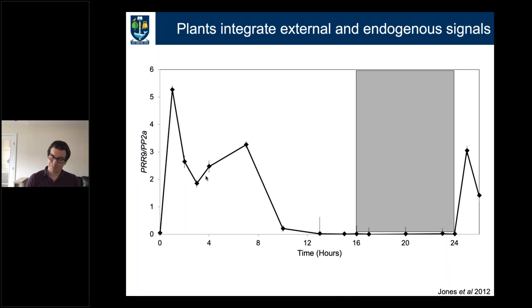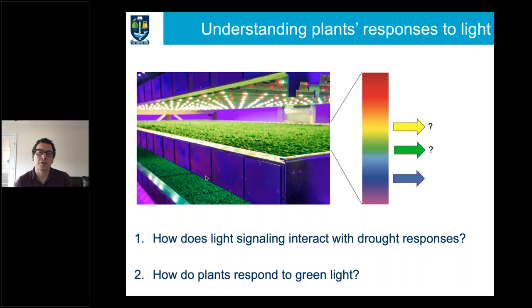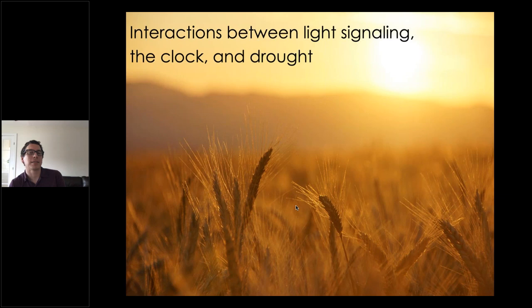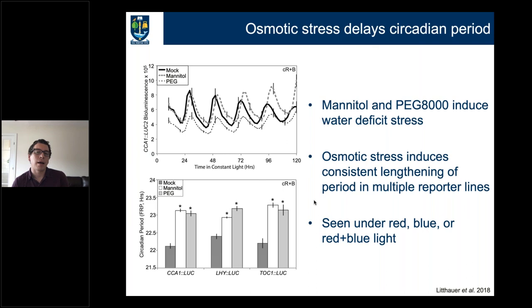Today I'm going to cover two stories. First, I'll touch on the blue side of the spectrum — a project looking at how light signaling interacts with drought responses in plants. Second, a passion project looking at how plants respond to green light. Starting with drought: drought is a very complex stress, so we simplified things down to an initial water-deficit stress. We grew plants on agar plates and applied either mannitol or PEG to reduce water availability — an osmotic stress.